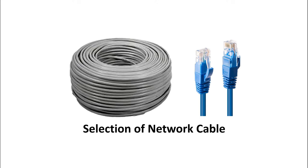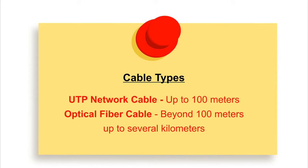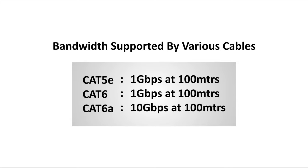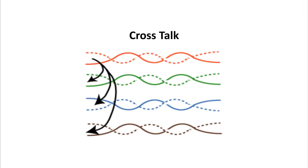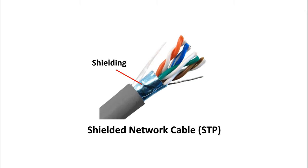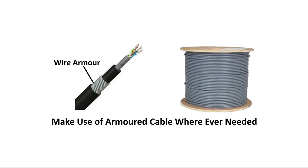Network cable selection is based on distance and bandwidth requirements. Cat5e and Cat6 cables both support 1 Gbps at 100 meters, while Cat6A supports 10 Gbps at 100 meters. In most installations, Cat6 cable can be used comfortably up to 100 meters. Low-quality cable may be prone to crosstalk and signal attenuation. Shielded Cat6 should be used near high-voltage lines, and armoured Cat6 in hostile terrain.